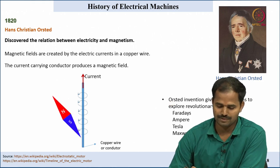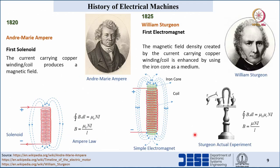Oersted's invention gave direction to explore revolutionary things with respect to Faraday, Ampere, Tesla, Maxwell, and other inventors. After that in 1820, Ampere invented the first solenoid based on Oersted's principles. He connected multiple coils in series to make a solenoid and demonstrated that the magnetic field is enhanced compared to a single conductor. He also proposed Ampere's law, which gives the relation between the magnetic field and current acting as its source.